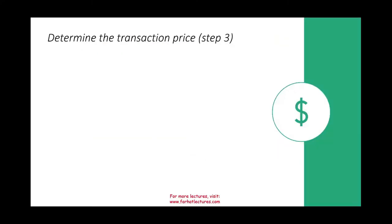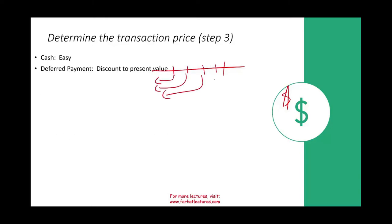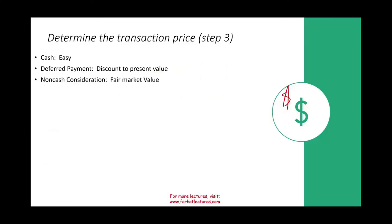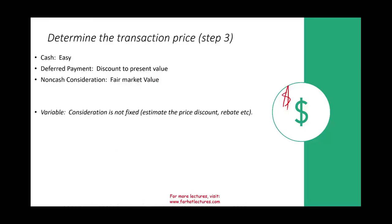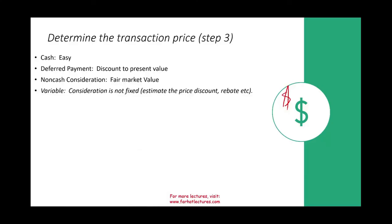Once we know our obligations, the next step is to determine the dollar amount — step three: determine the transaction price. If payment is cash, we use the cash amount. If payments are deferred, we discount them to present value. If we receive non-cash consideration such as inventory, land, or a building, the fair market value of that consideration is our transaction price. Sometimes we have variable consideration — the price doesn't have to be fixed, as long as we can estimate it accounting for discounts, rebates, and anything else.